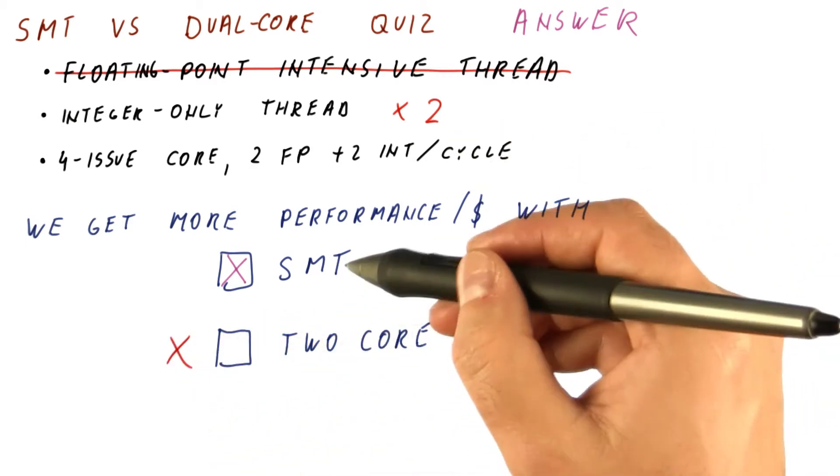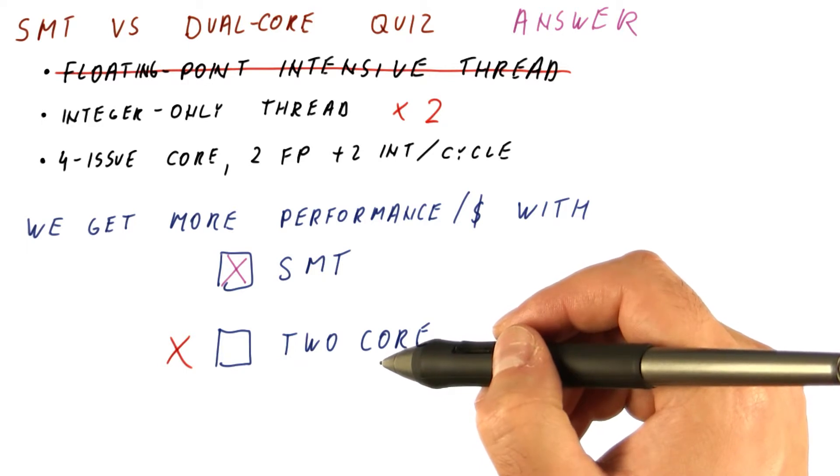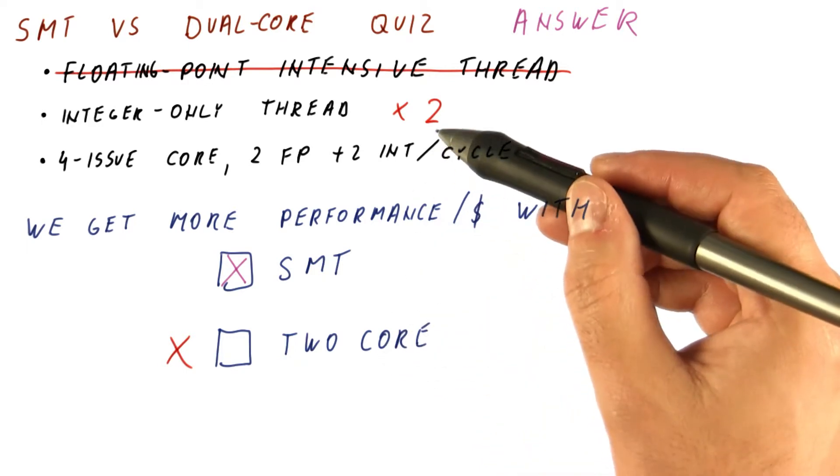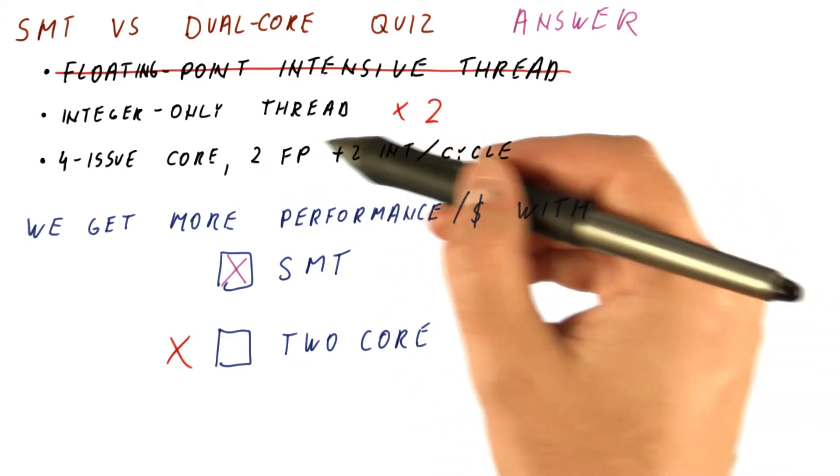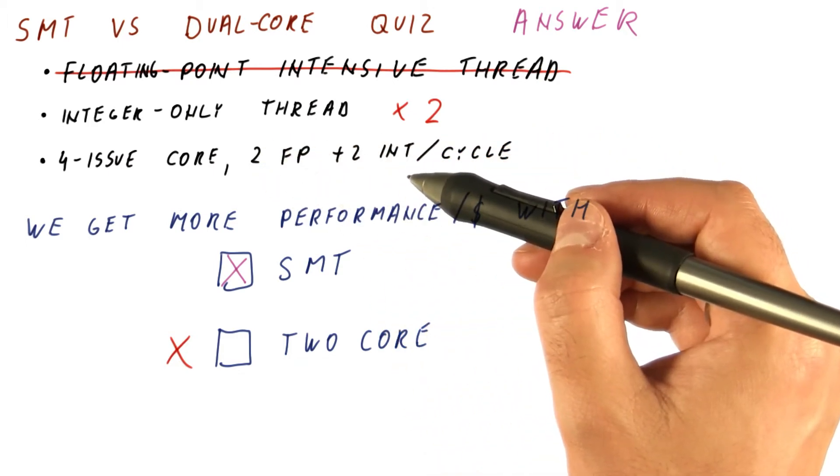As you can see, it's not that SMT always wins over multiple cores. It depends on what types of programs we have, the distribution of issue slots among units, and how different applications are using them.